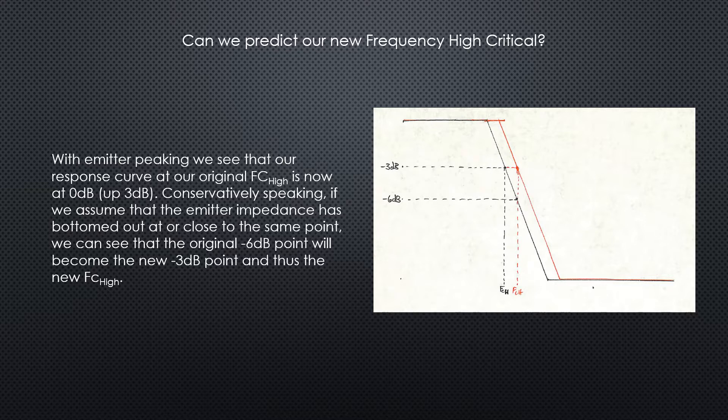Now when we put in the emitter peaking, we know that the three dB point—the original fc high—the gain returned back to basically our zero dB point. So we know that that frequency shifted up three dB to the zero dB point.